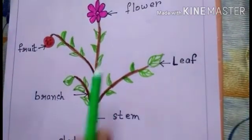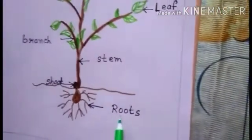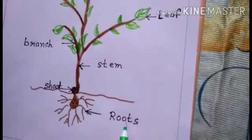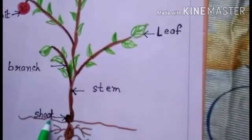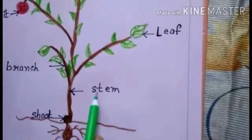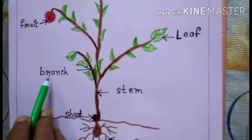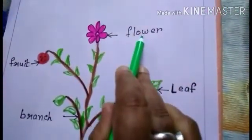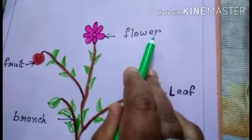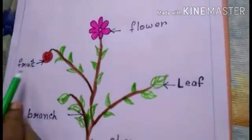Now I will spell the parts of the plant. Roots: R-O-O-T-S. Shoot: S-H-O-O-T. Stem: S-T-E-M. Branch: B-R-A-N-C-H. Leaf: L-E-A-F. Flower: F-L-O-W-E-R. Fruit: F-R-U-I-T.